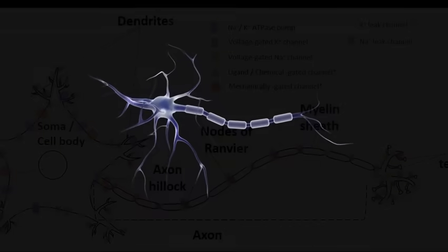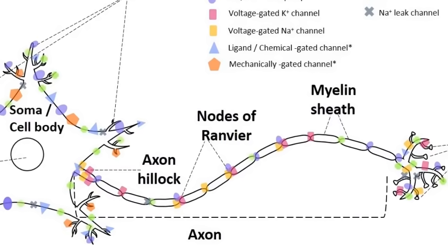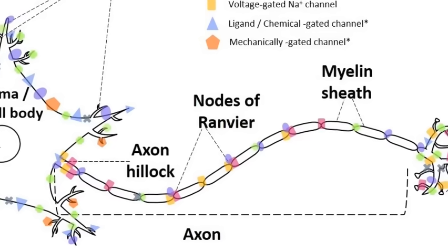Many axons are covered by a myelin sheath, a fatty layer that acts like insulation around a wire. It helps the signal move faster and more efficiently.